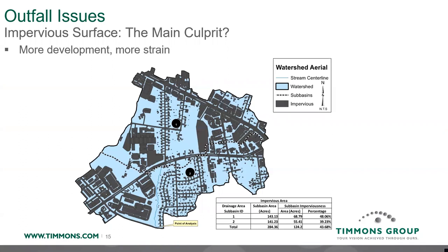Development is a big contributor to the water volume and velocity heading to these outfalls. This is a pretty typical urban drainage area — the dark gray is impervious surface and the light blue is the open pervious area. This drainage basin is about 43.7% impervious, meaning when water hits that surface, it doesn't have time to absorb into the soil. It comes into our outfalls at fast velocity and just shoots out, cutting away sediment and moving it downstream. Twenty years ago when these outfalls were designed, there wasn't this much development — that's the source of many of our issues.